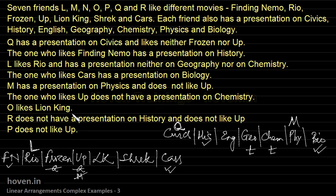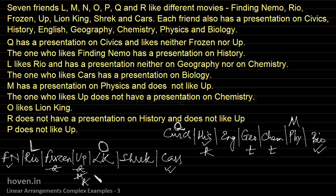O likes Lion King, so we put O under Lion King. R does not have a presentation on history, so we mark R-cross under History, and R doesn't like Up either — R-cross under Up. P also doesn't like Up — P-cross under Up. So four people — Q, M, R, and P — cannot be allocated to Up.